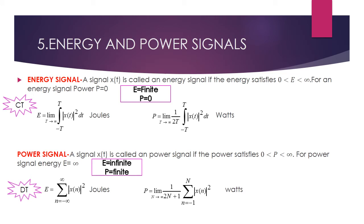The next classification is energy and power signals. Always remember: if a signal is an energy signal, the energy value will be finite and the power value will be zero. If a signal is a power signal, the energy value will be infinite and the power value will be finite. The energy formula for continuous time is E = lim(T→∞) ∫[−T to T] |x(t)|² dt joules. Similar formulas exist for discrete time. Power formulas also follow for both continuous and discrete time.